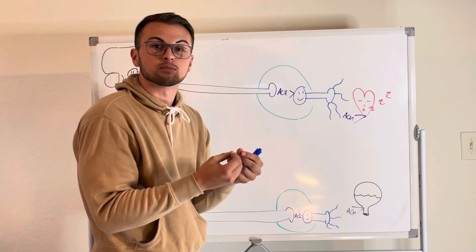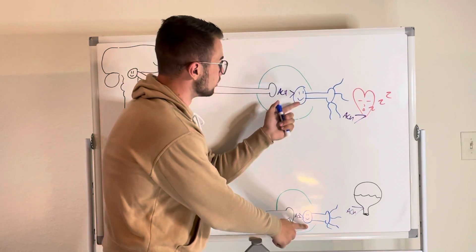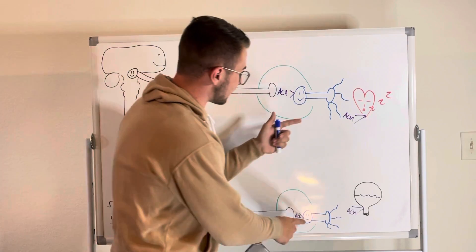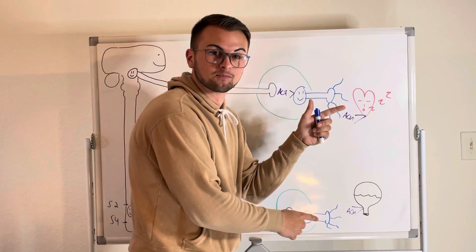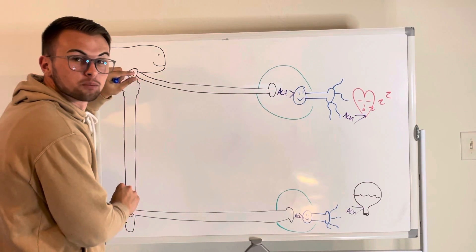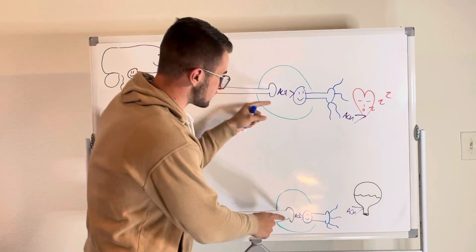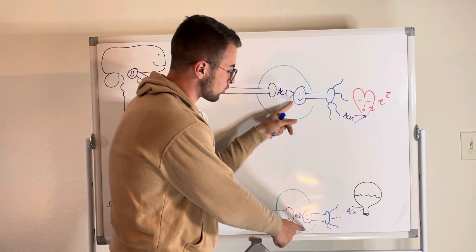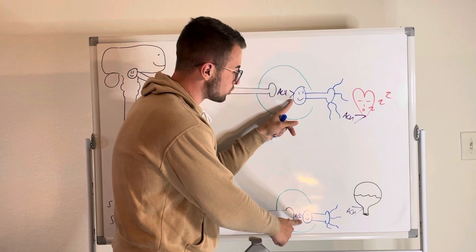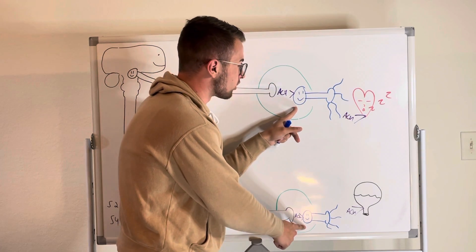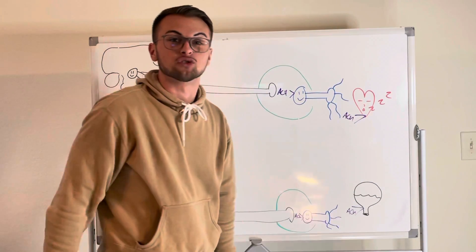These receptors will allow cation influx into the postganglionic neurons and this will eventually result in a depolarization. So what has happened so far? We've had a depolarization in the preganglionic neuron which causes an acetylcholine release from the axon terminal. This acetylcholine binds to the N2 receptors on our postganglionic neurons and then our postganglionic neuron fires an action potential of its own.